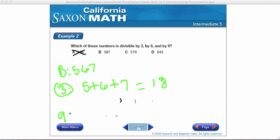18 is also divisible by 9, so 9 is a factor. But 6 has to be divisible by 2 and 3. This ends in a 7. 7 is an odd number, so it is not divisible by 2. So, B is not divisible by 6. It's only divisible by 3 and by 9.